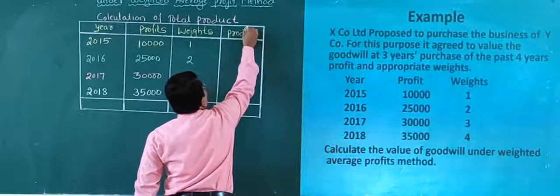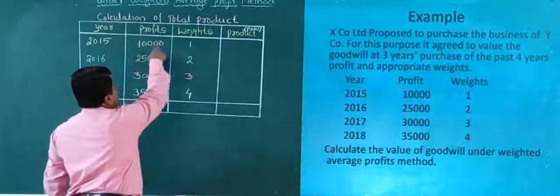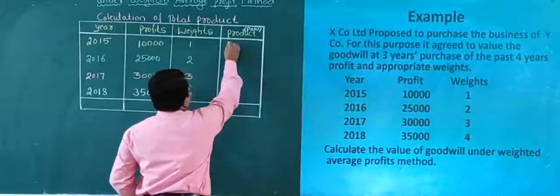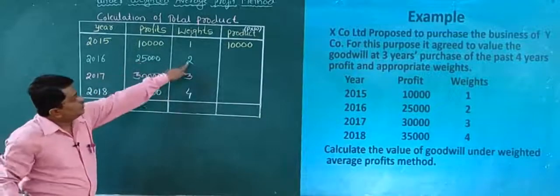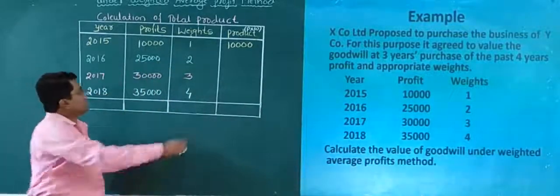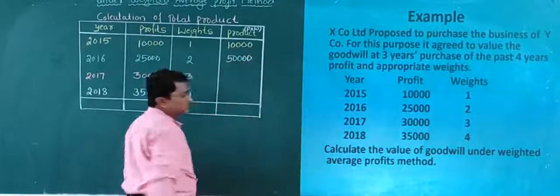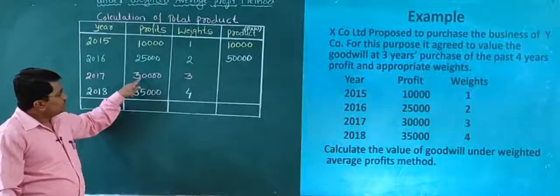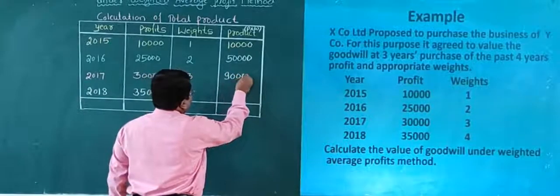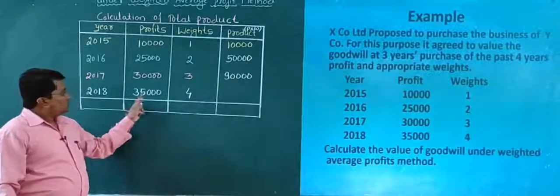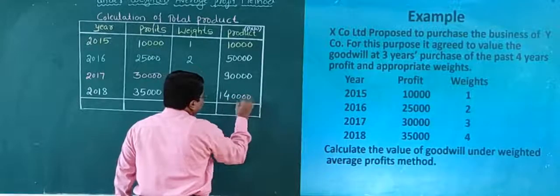Now we calculate the product column — profit multiplied by weight for each year. 10,000 × 1 = 10,000. 25,000 × 2 = 50,000. 30,000 × 3 = 90,000. 35,000 × 4 = 1,40,000.